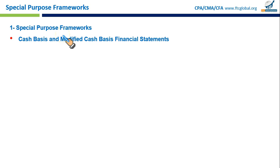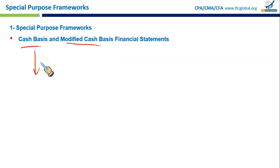Cash basis and modified cash basis are alternative ways of recording financial information. These methods are often used by smaller entities that cannot or should not use the complete GAAP because they do not need to follow complex accrual accounting.